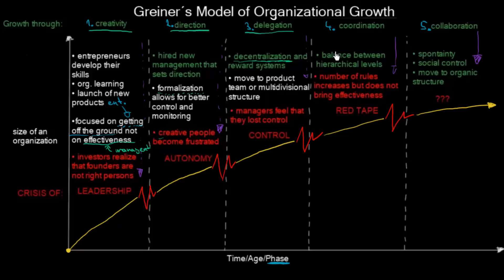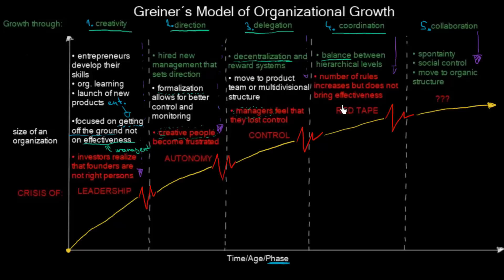Even this can be solved in the fourth phase, where we are going through coordination. Here, we try to find a balance between the hierarchical levels so that the creative people are satisfied and managers feel they have control over the company. However, the number of rules keeps increasing but does not bring effectiveness. You have to bring a lot of rules into the workplace to achieve this balance, and that's how we get to bureaucracy. This phase ends with what is called the crisis of red tape — our organization has become overly bureaucratic.